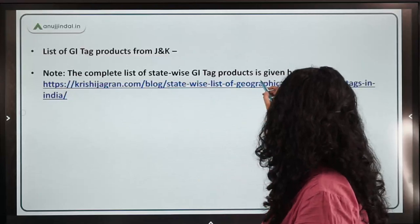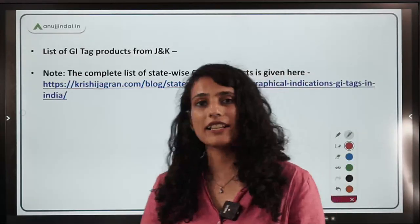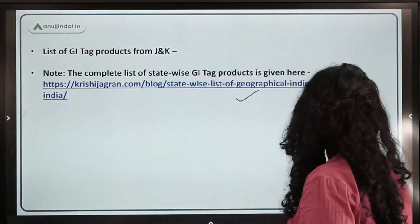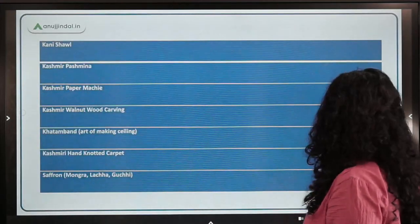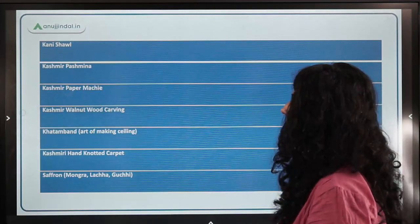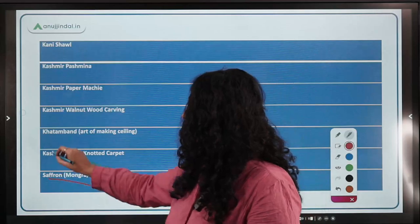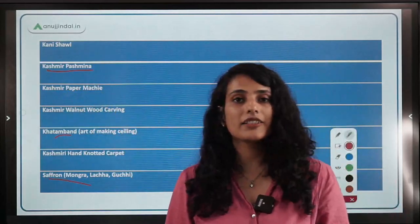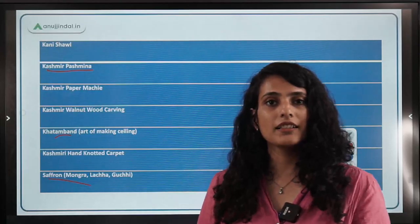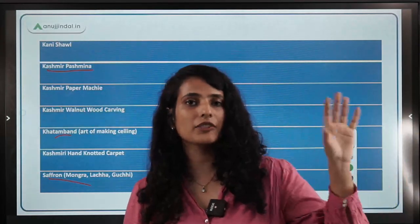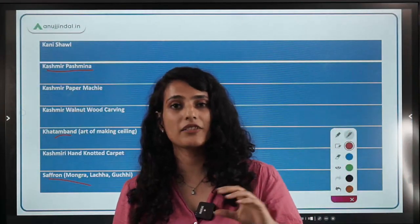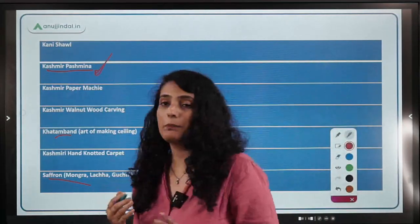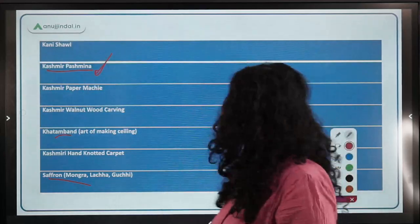A complete statewide list of GI products is provided in the link below for exam reference. Important GI tag products from Jammu and Kashmir include: Saffron, Khatamband — the art of making decorative ceilings — and Kashmiri Pashmina Shawl, which is made from the Changthang variety of goat unique to the Union Territory of Jammu and Kashmir and Ladakh. These are among the highest-value exports from Jammu and Kashmir.